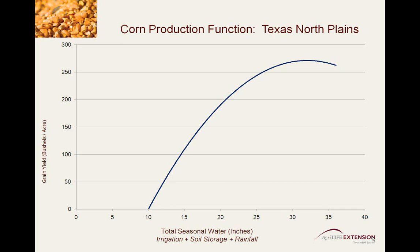At this point, the yield plateaus with additional water and then begins to decrease. The decrease is caused most commonly by saturation effects that hinder the soil-oxygen water balance in the plant root zone. This is commonly referred to as water logging. In this case, the peak yield occurs on the far side of the plateau at about 33 inches of total seasonal water, or roughly 23 inches of applied irrigation water.